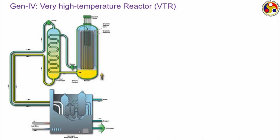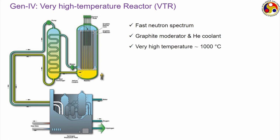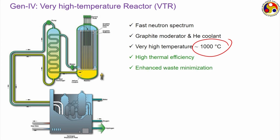The very high temperature reactor (VHTR) — another concept and a fast reactor — is an advanced version of gas cooled reactors with the same graphite moderator and helium as coolant, and can go up to extreme temperatures of 1000 degree Celsius, giving very high thermal efficiency. It also minimizes waste production and like any gas turbine cycle it is suitable for cogeneration, thereby increasing the combined cycle efficiency even further.